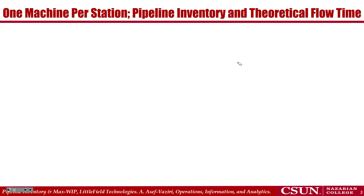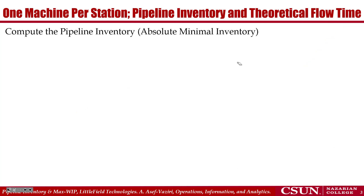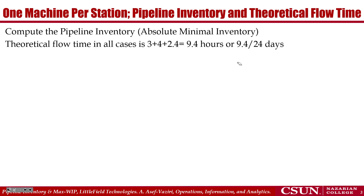Compute the pipeline inventory — that is the absolute minimum inventory we need. Flow time in Station 1 is 3 hours, in Station 2 is 4 hours, and in Station 3 is 2.4 hours.